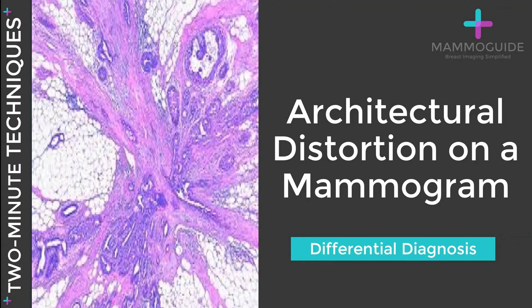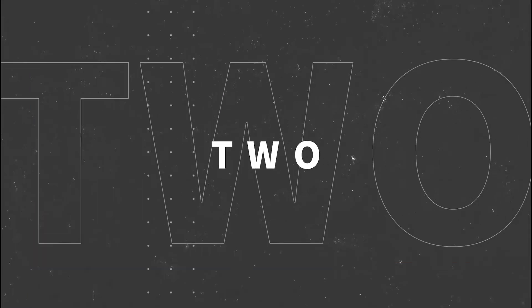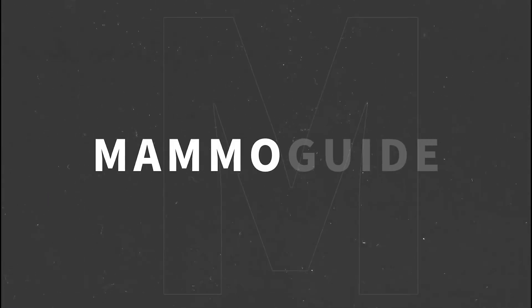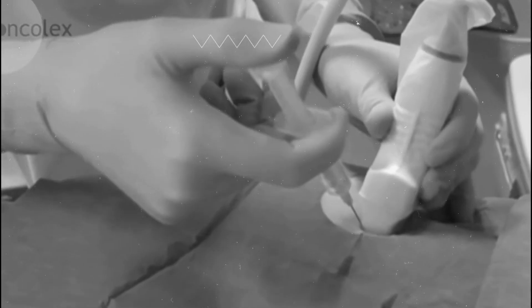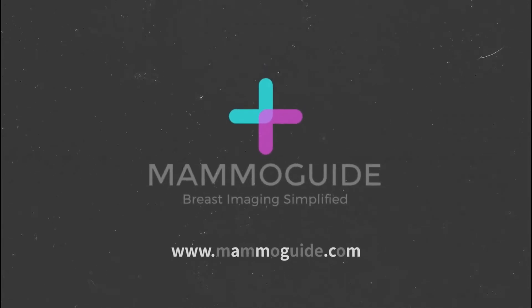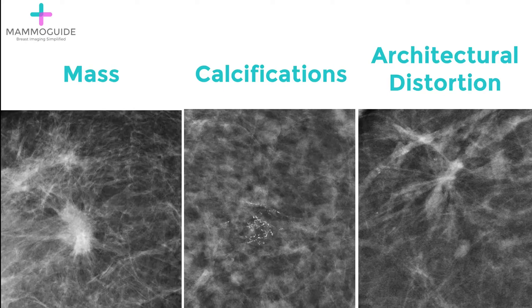What are the diagnostic possibilities when you see architectural distortion on a mammogram? There are three main findings that you're looking for when evaluating a mammogram — the three main ways that breast cancer can present. You're looking for masses, calcifications, and architectural distortion. In this video, we're going to focus on architectural distortion, what it means, and what can cause it.